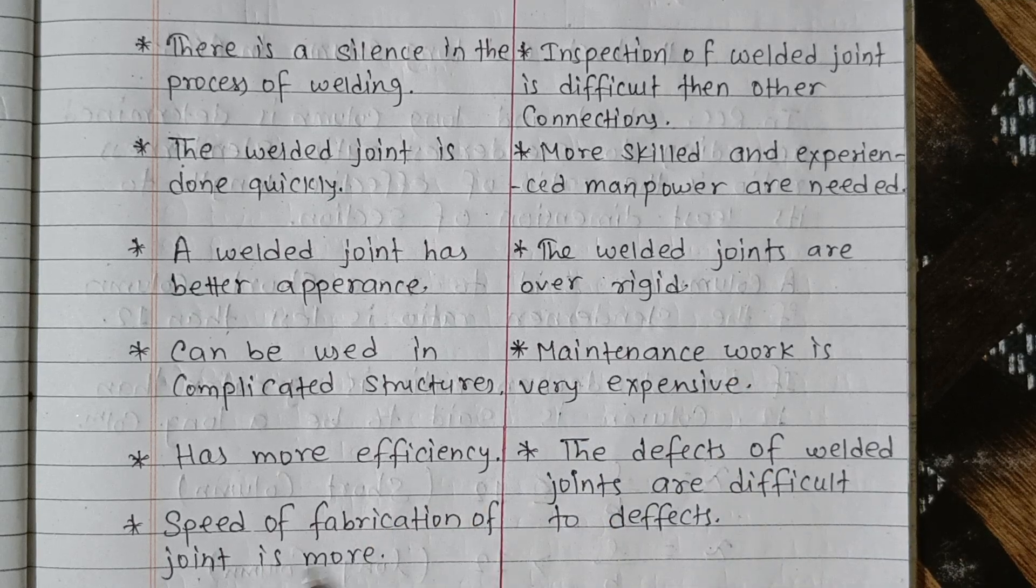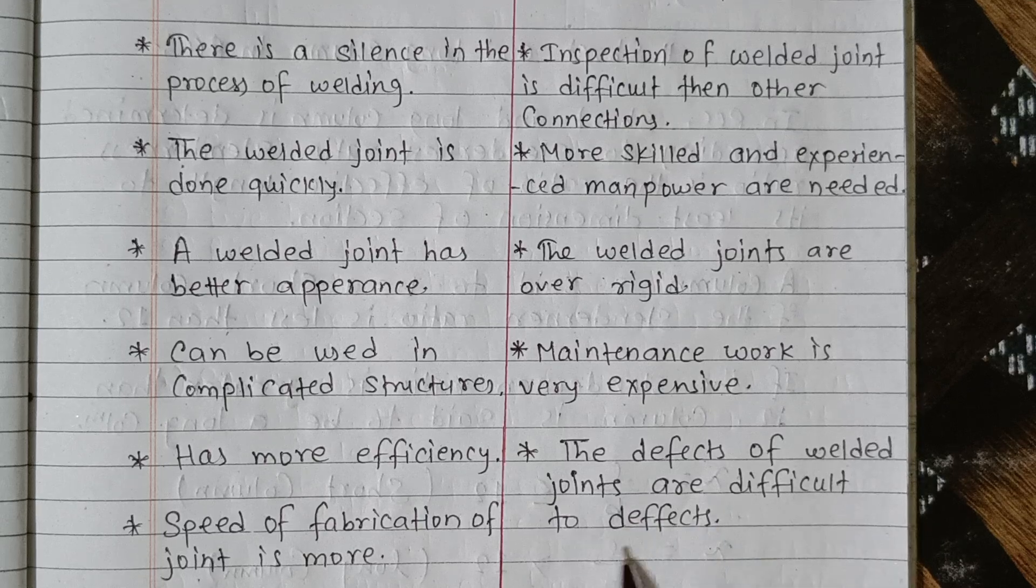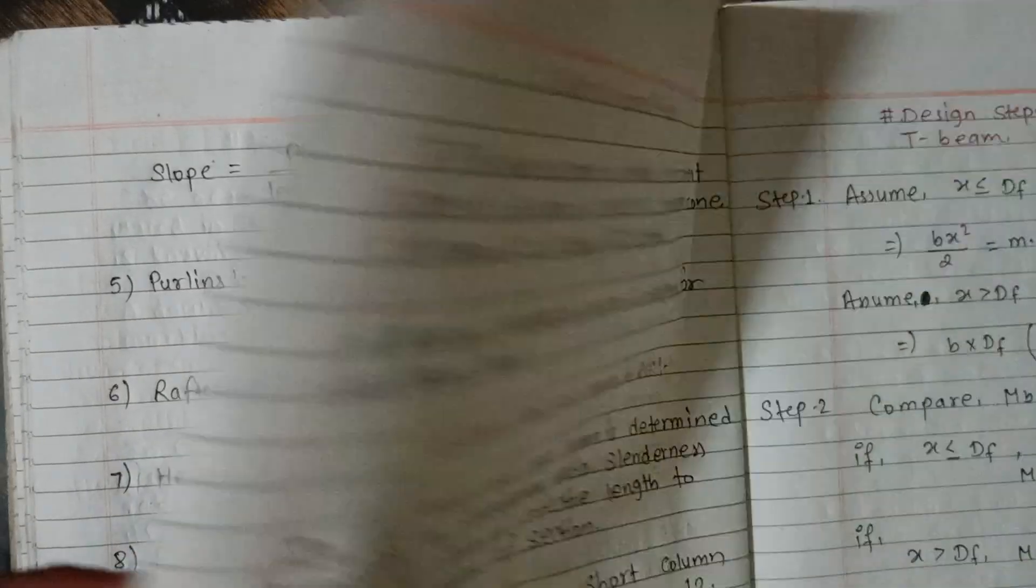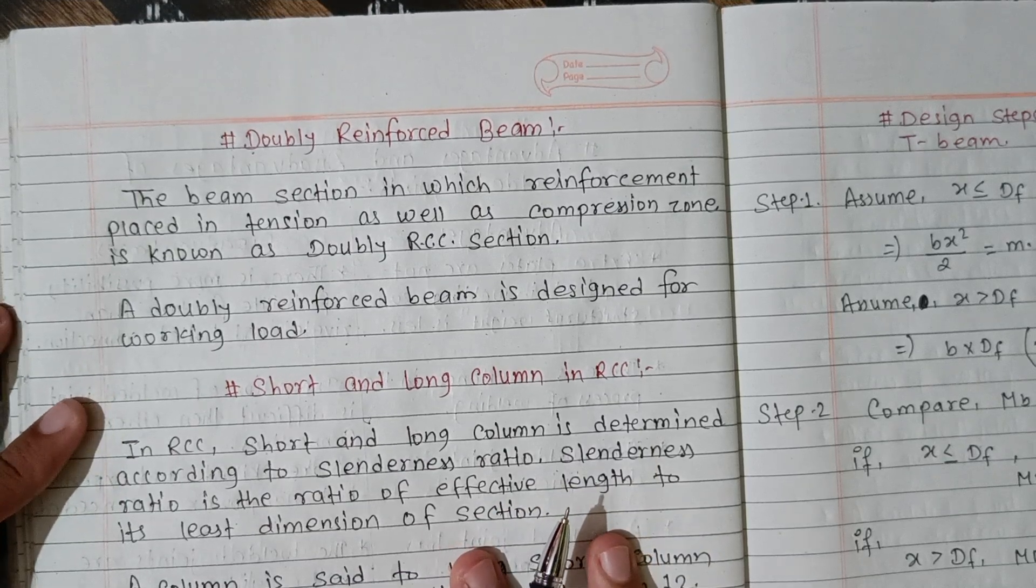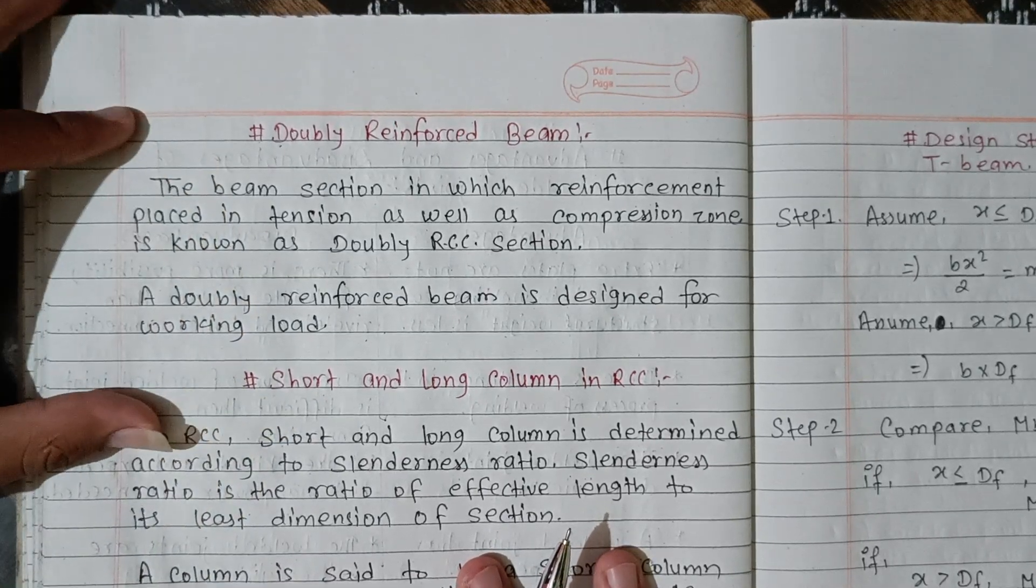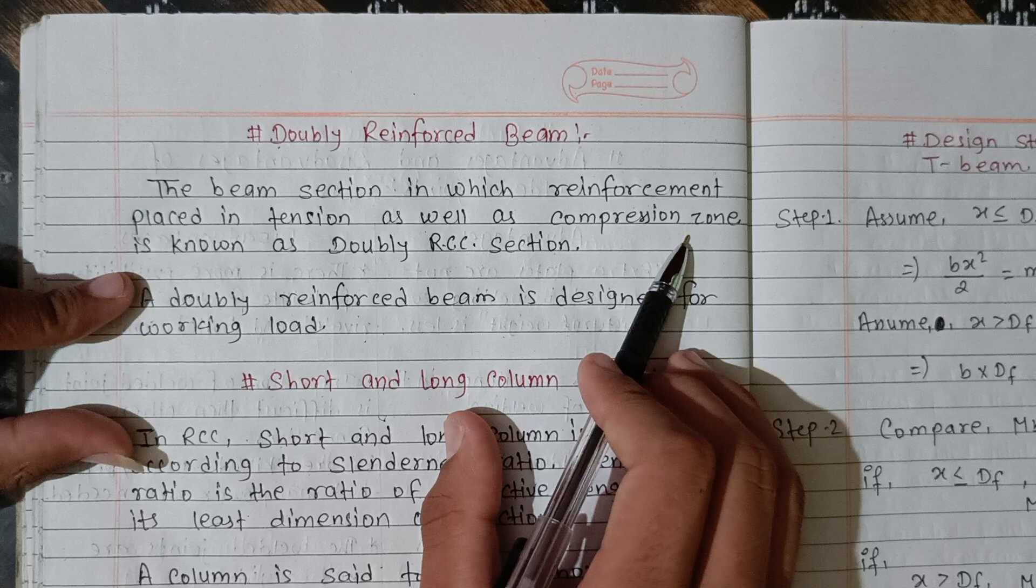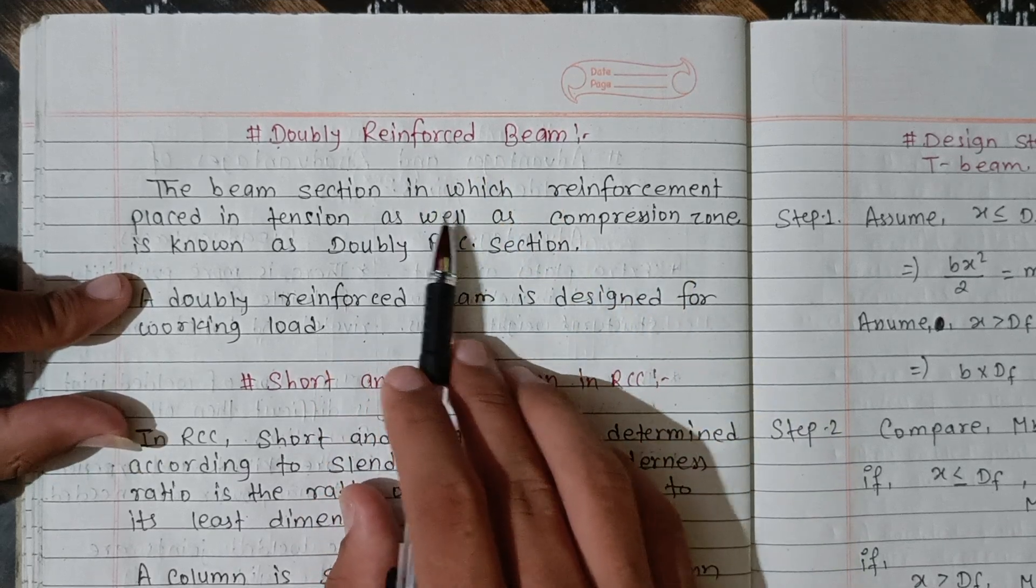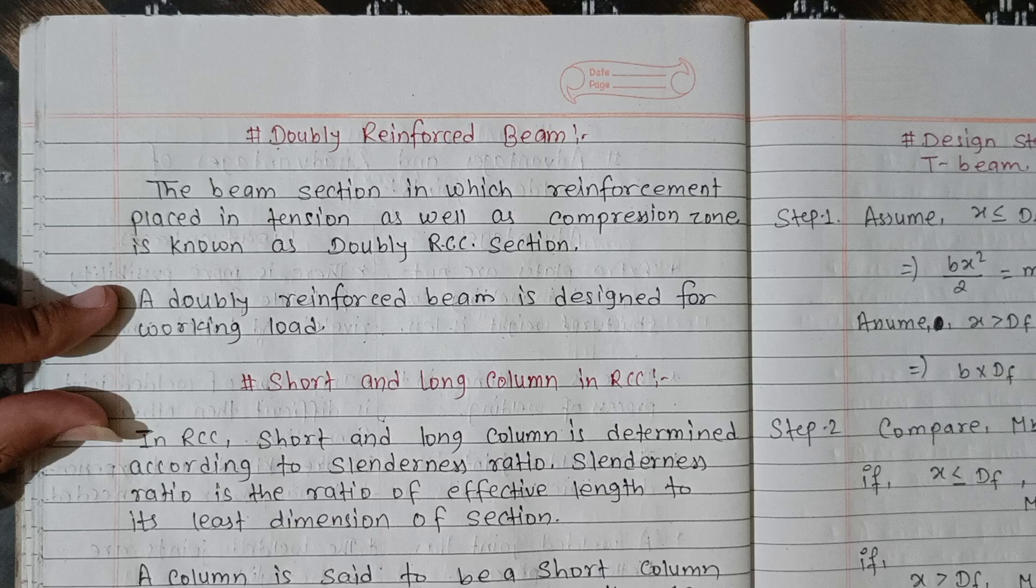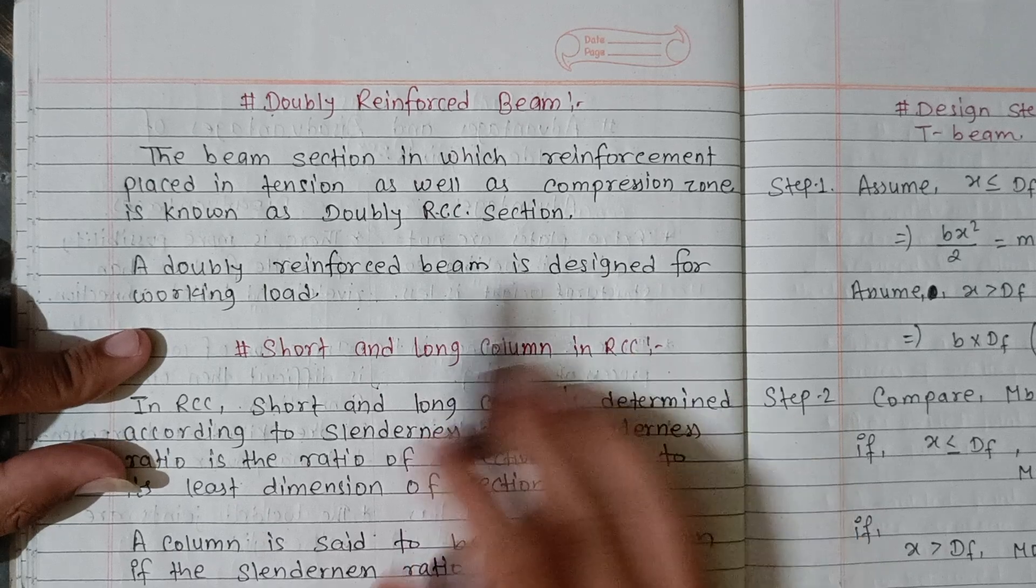Maintenance work is very expensive. More efficiency, speed of fabrication of joint is more. Defects of welded joint are difficult to detect. Doubly reinforced beam: the beam section in which reinforcement is placed in tension as well as compression zone. When a reinforced beam is designed for working load, it is working load design.